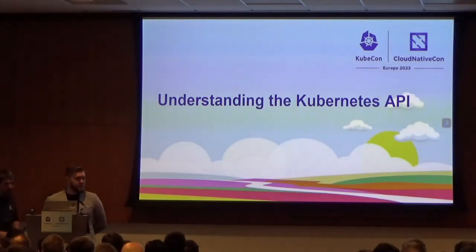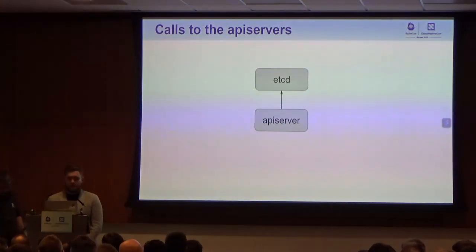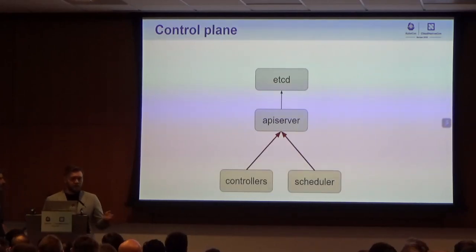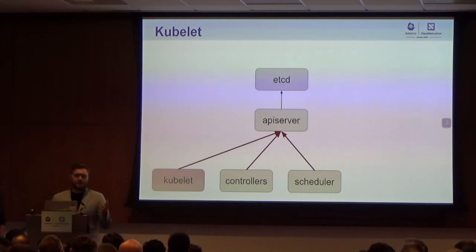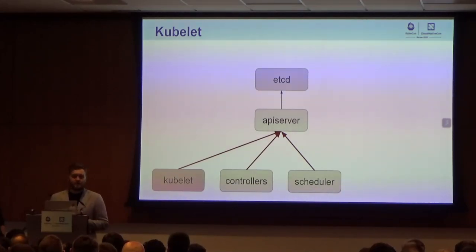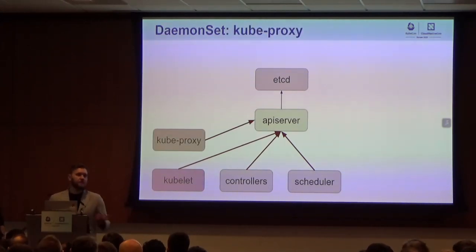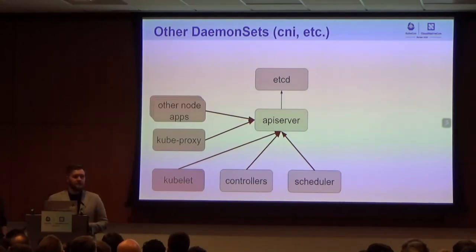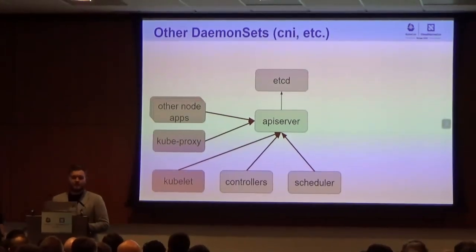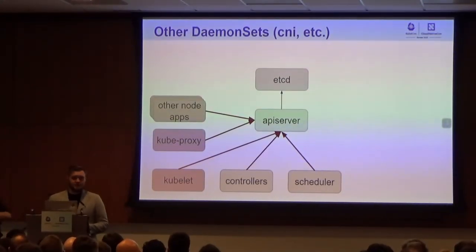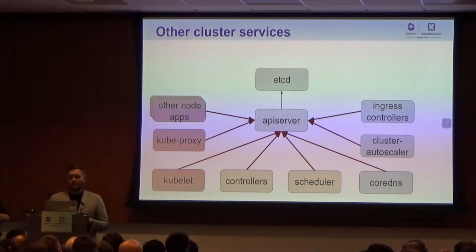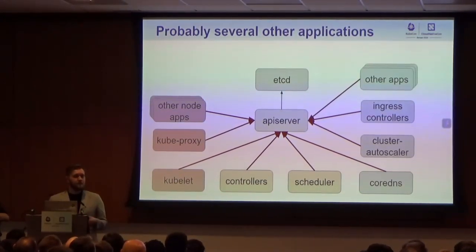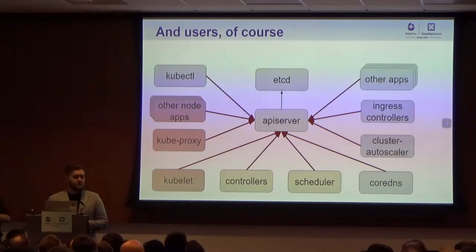We already mentioned a few components running in the control plane: API server, etcd, kube-controller-manager, and scheduler. But there's also kubelet, running on each node to run pods and update events, which can have significant impact on API server and etcd performance. Then there's kube-proxy for service load balancing, different daemon sets like the Cilium agent or Datadog agent — they are powerful, but with great power comes great responsibility not to overload the API server. We also have DNS, cluster autoscaler, ingress controllers, other controllers, and users with kubectl.